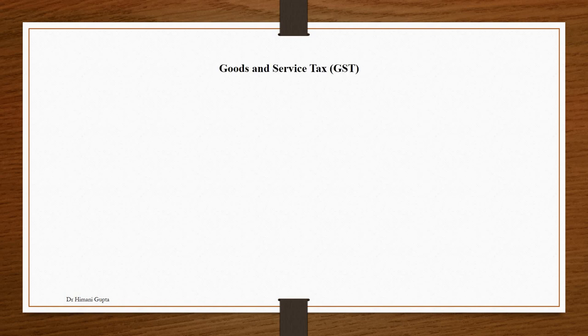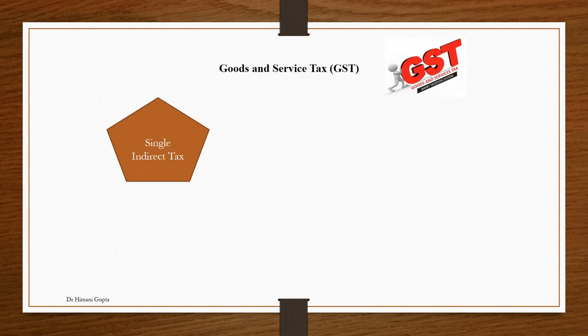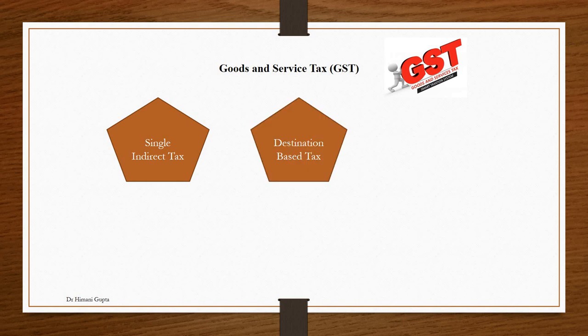Goods and Service Tax is a single indirect tax. Before GST we had many taxes — excise duty tax, VAT, CST, entertainment tax, service tax — but now all these taxes are finished. Only one tax is applicable across whole India, which is GST. Whether goods are being manufactured, sold within a state, or sold to another state, only one tax applies: GST.